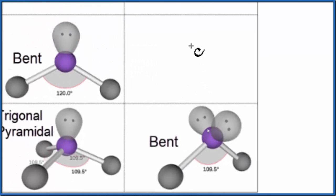We could also use the AXE notation to figure this out. A, that's the central atom. That's the sulfur. X, those are the atoms bonded to that central atom. We have the one, two chlorine atoms.